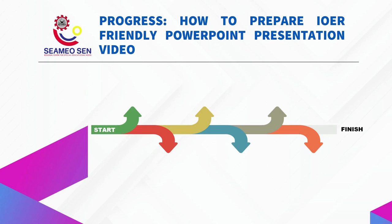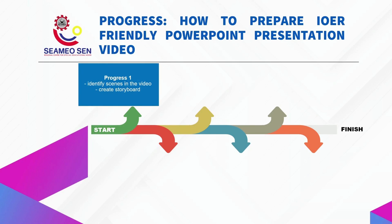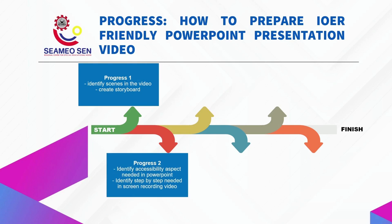During our discussion, we identified six milestones which need to be completed. Firstly, we identified suitable scenes in the video and created the storyboard. Then, we identified the accessibility aspects needed in preparing the PowerPoint slide. At the same time, we also identified steps needed during screen recording.